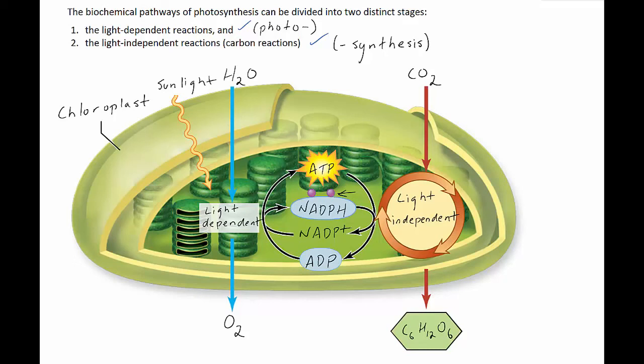The light-independent reactions do not need sunlight to occur — they are independent of the need for light. So as long as there is enough ATP and NADPH inside the chloroplast, the light-independent reactions can occur.